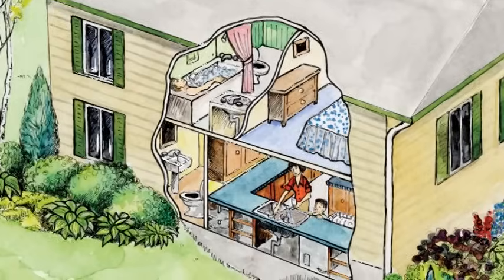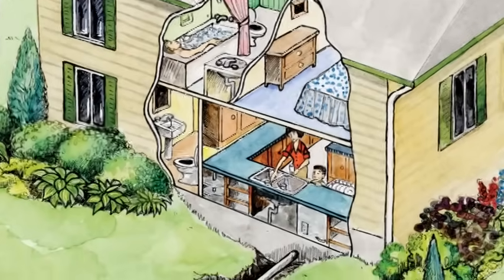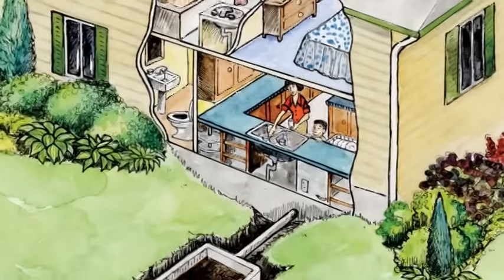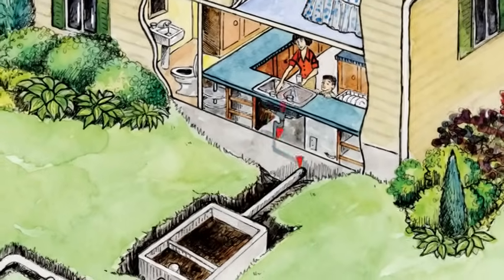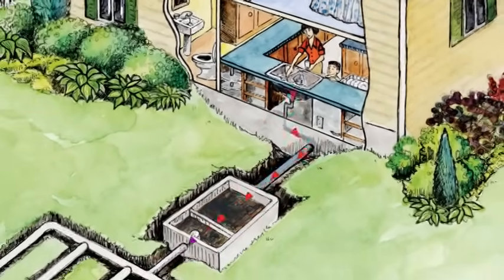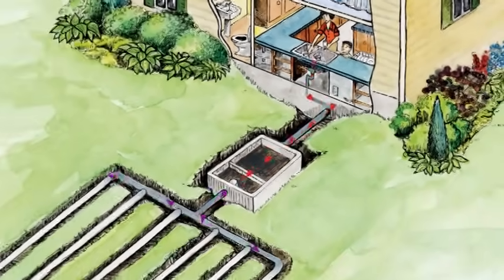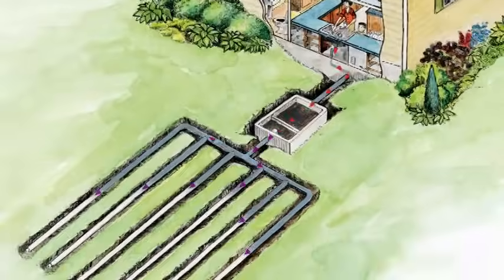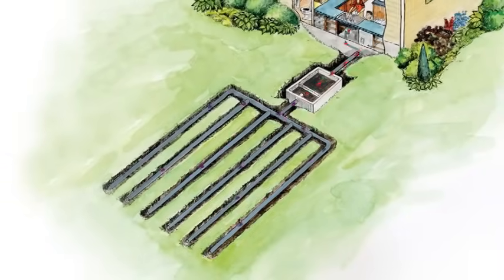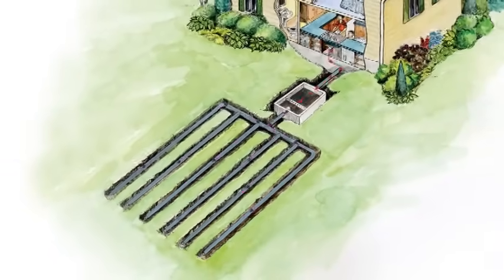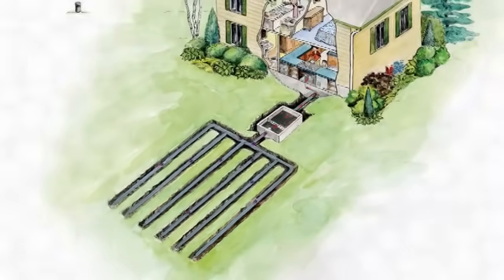Most rural homes have what's defined under the Ontario Building Code as a Class 4 septic system — that is a septic tank, along with a leaching bed or a filter bed, all buried beneath the soil.